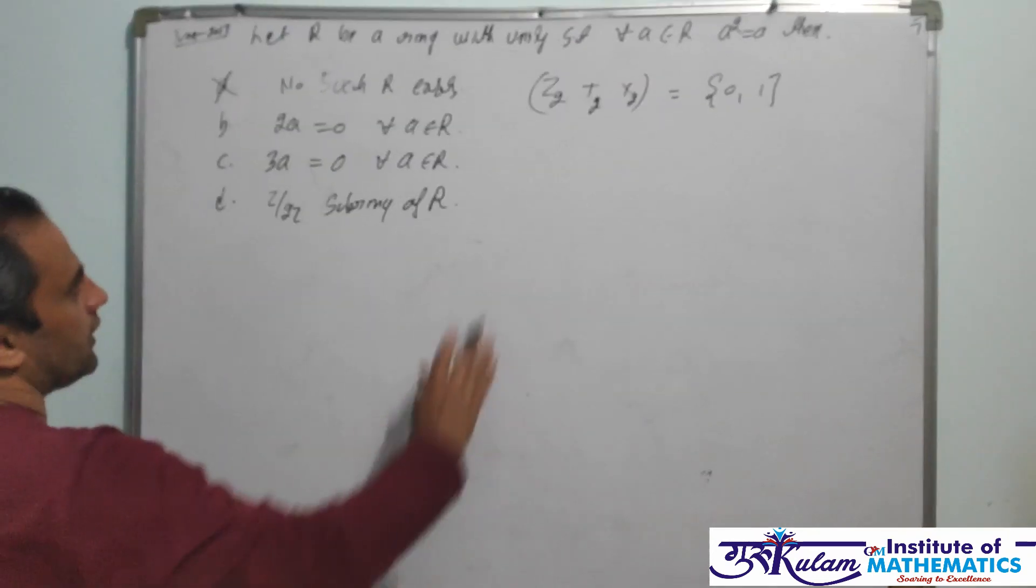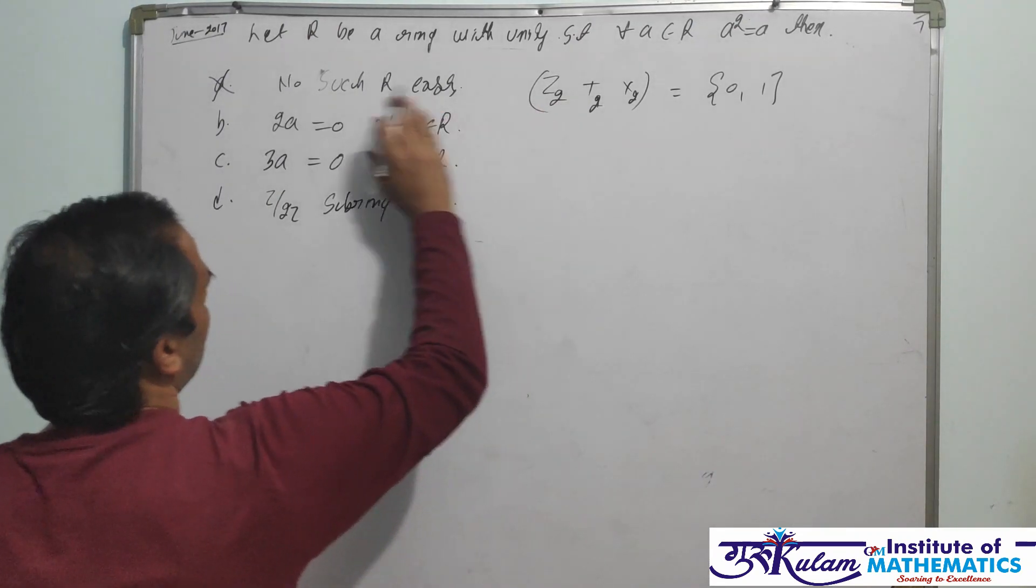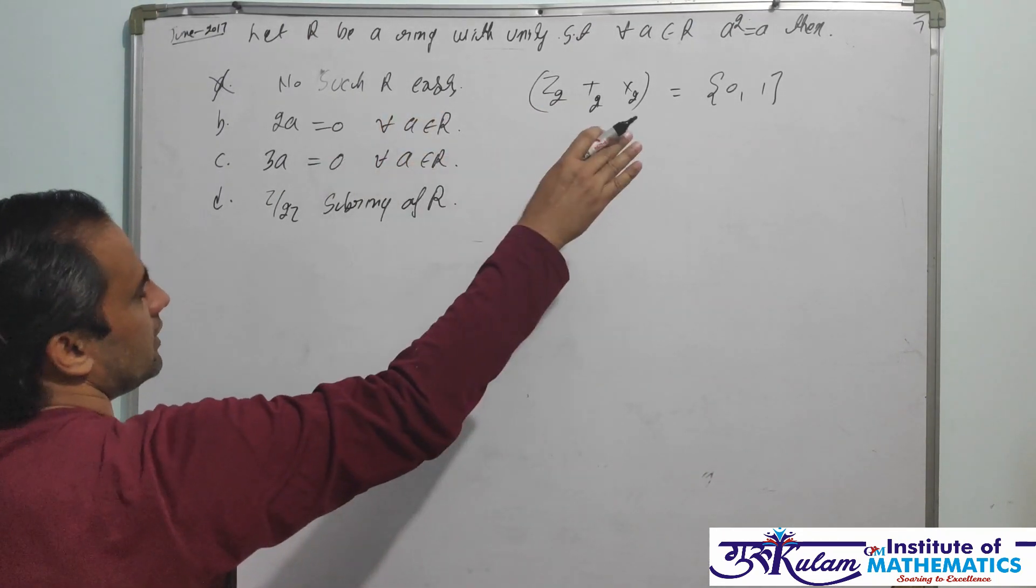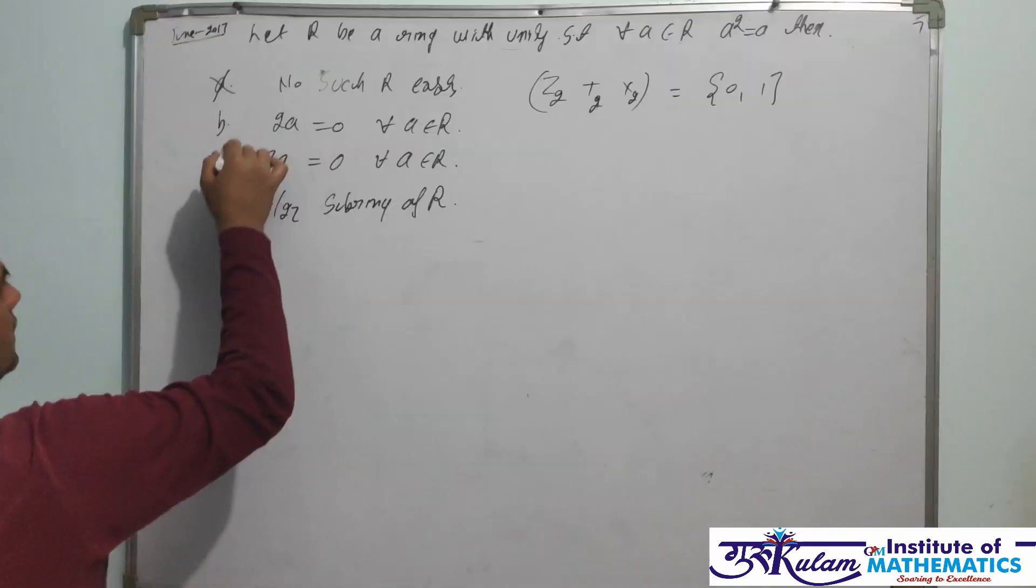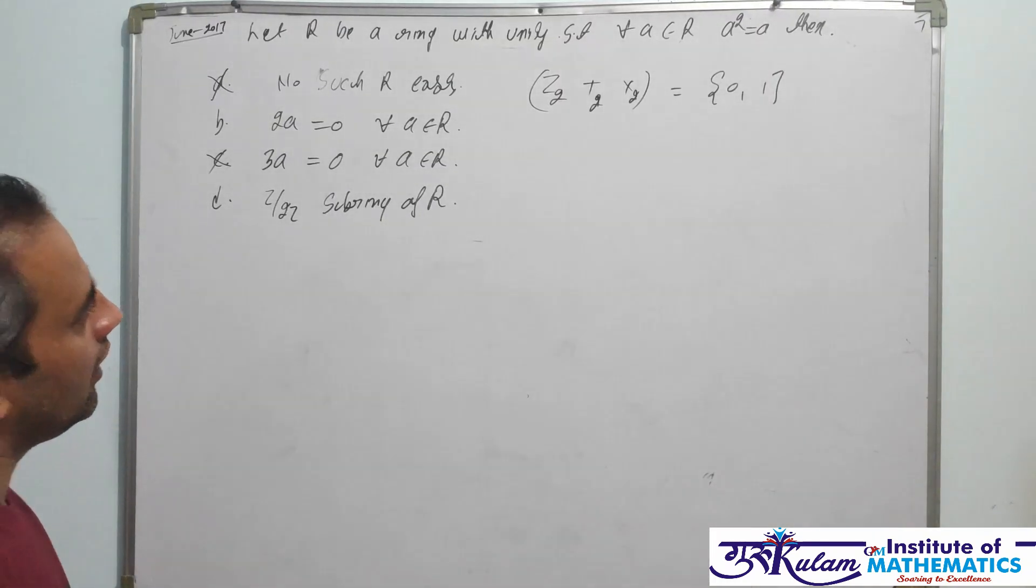If we take the same example, 2A = 0 but 3·1 is not 0. So the third option is also discarded.